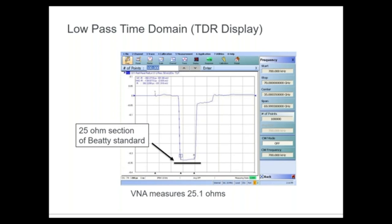For transmission, we can look at what is called the eye diagram. We convert frequency domain S-parameter data through an algorithm in the time domain in the transmission sense, displaying either NRZ or PAM4 eye diagrams. This allows us to characterize interconnects not only in frequency, but also in time — seeing what the impact is and what eye closure looks like.